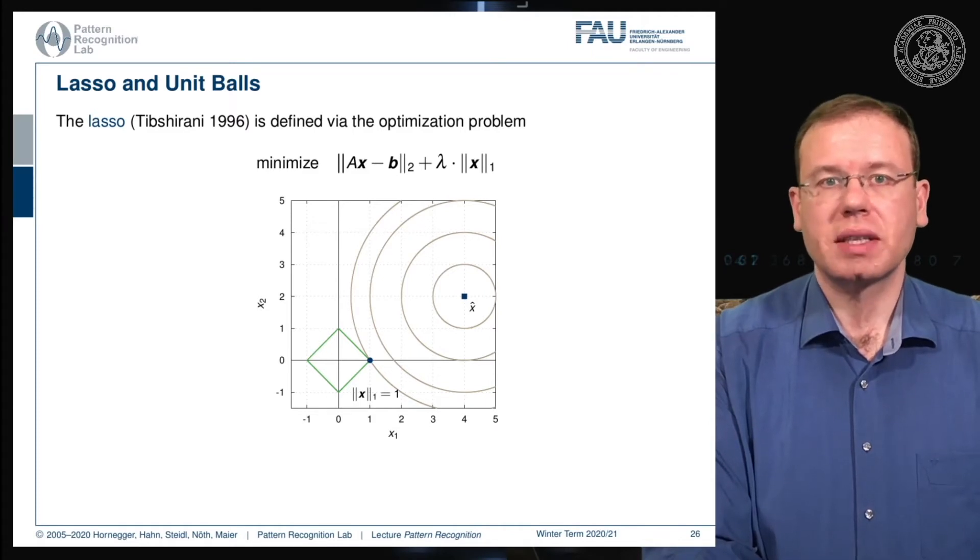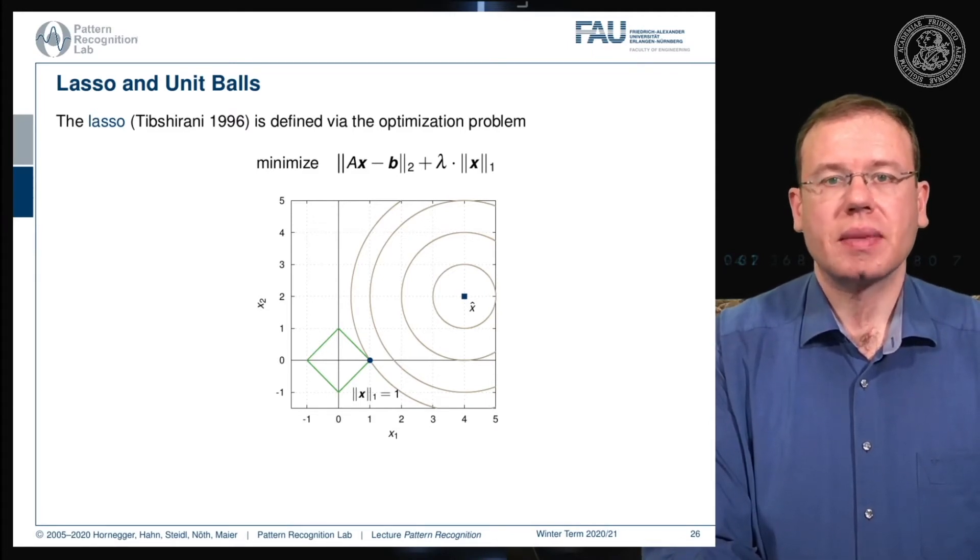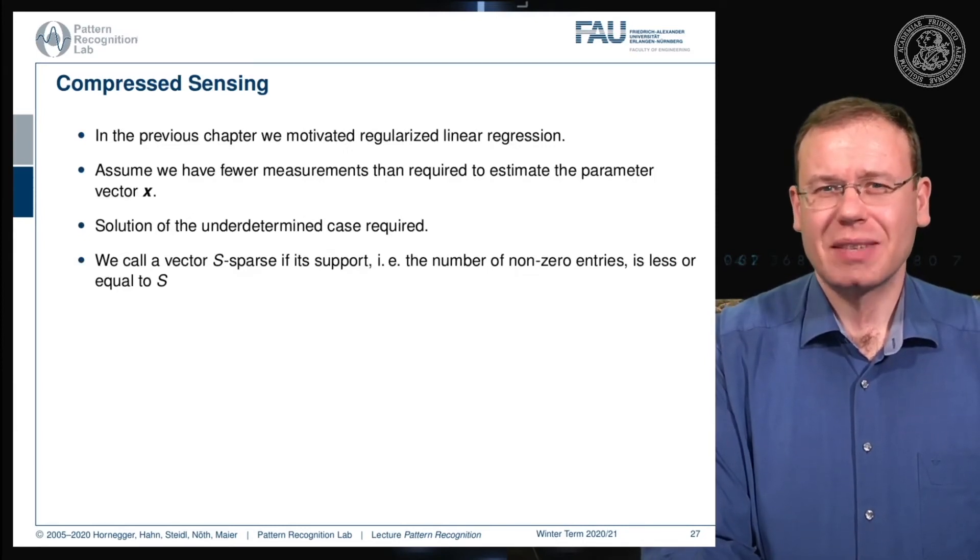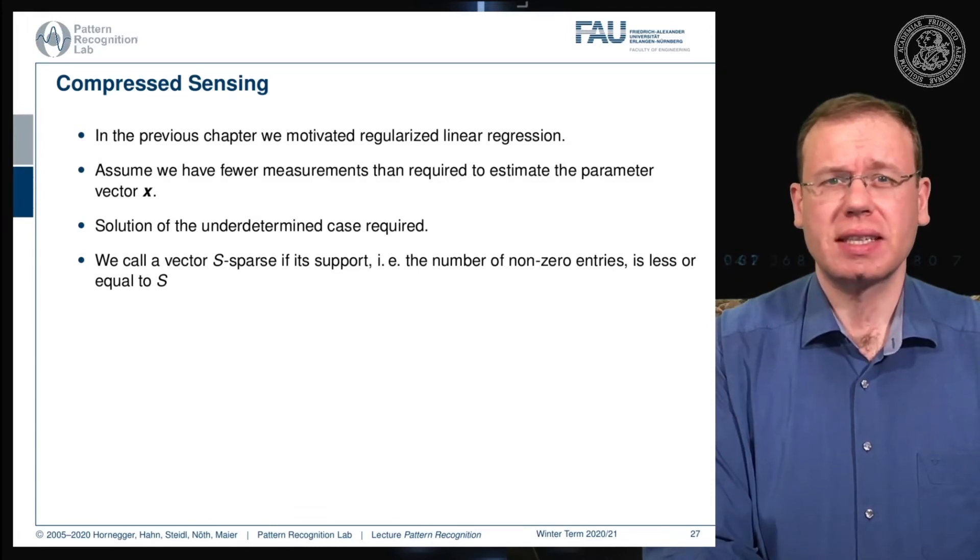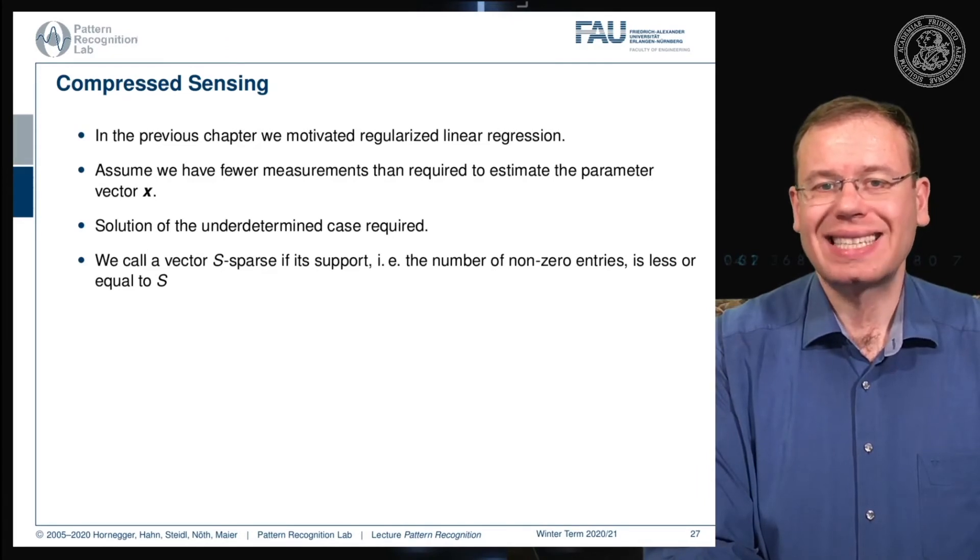Let's look into compressed sensing. If you work with magnetic resonance imaging or other reconstruction problems in CT, compressed sensing theory is very important. We're only hinting at this here. If you want to know more, there are classes on magnetic resonance imaging where these concepts are explained in more detail. Here we assume that we have fewer measurements than required to estimate the parameter vector x. The solution will be underdetermined and therefore we need regularization. We can call a vector s sparse if its support - the number of non-zero entries - is less or equal to s.